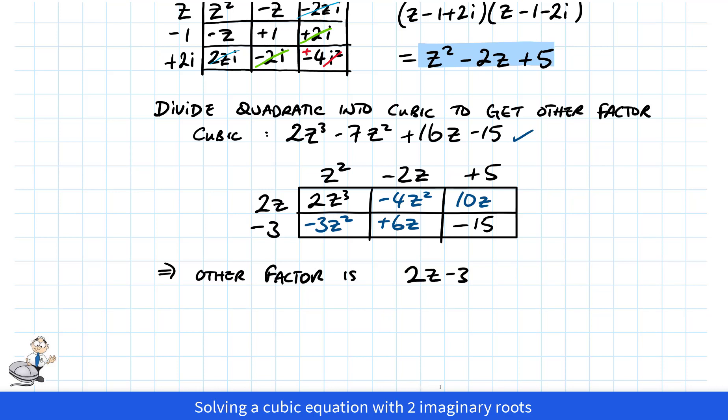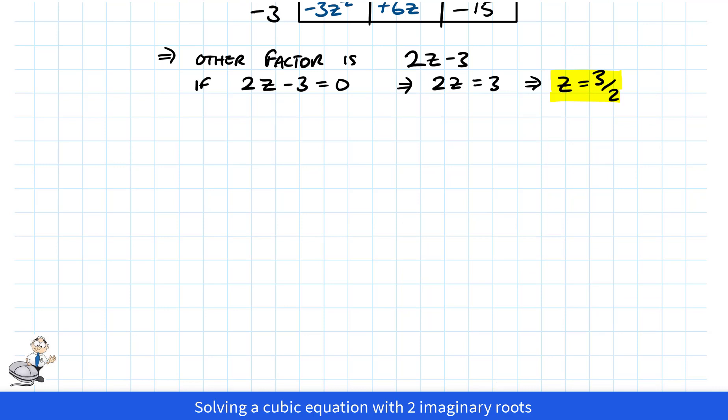If 2z - 3 = 0, then 2z = 3 and z = 3/2. So now we have all three solutions: the two imaginary solutions and the real solution, 3/2.